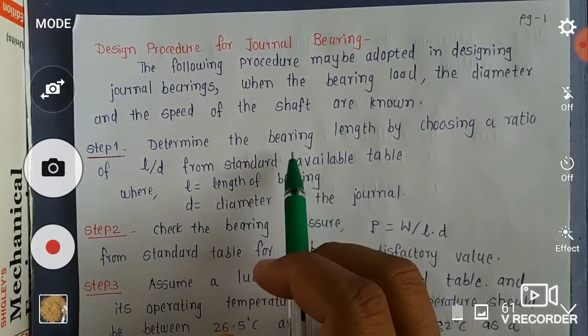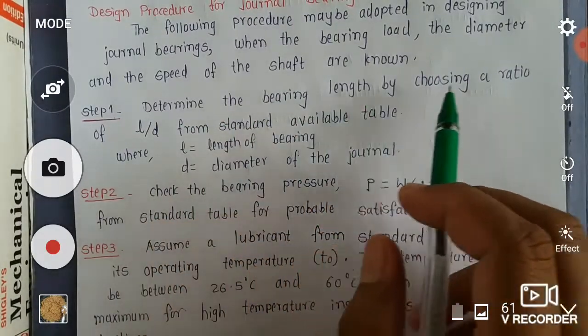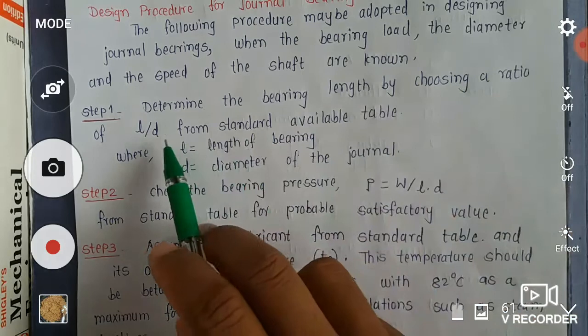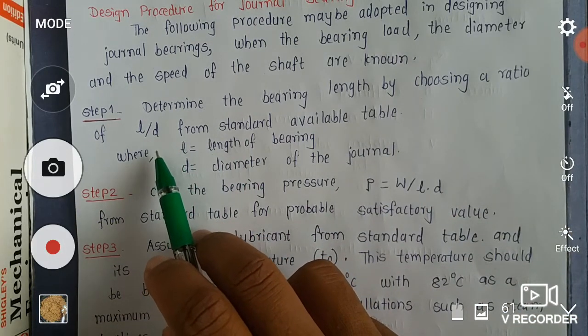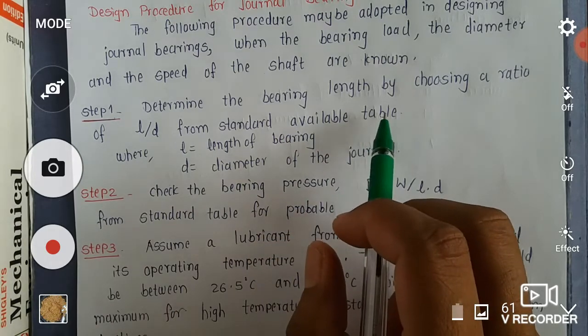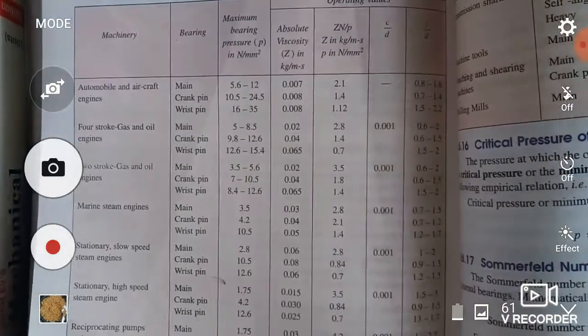Step 1: Determine the bearing length by choosing a ratio of L by D, that is length of bearing divided by diameter of the journal, from the standard available data.